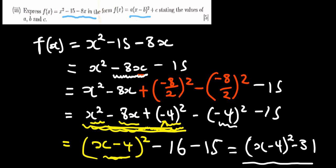So we can see that this here is in the form A times x minus B squared. So it means our A is 1 because I cannot see any number in front here. And then our B is just 4. And then the plus C here, this C is the minus 31.